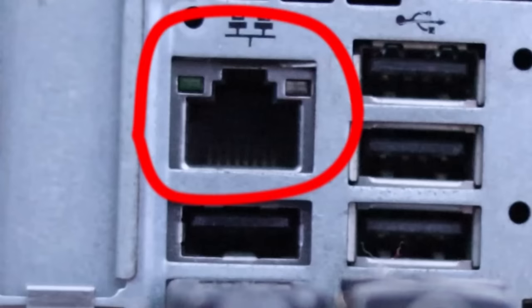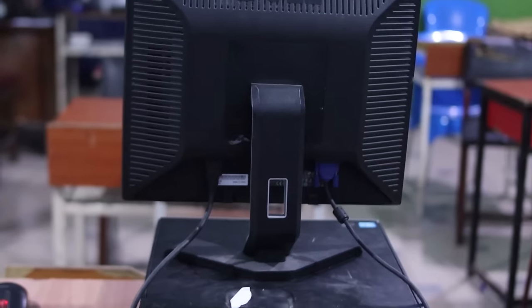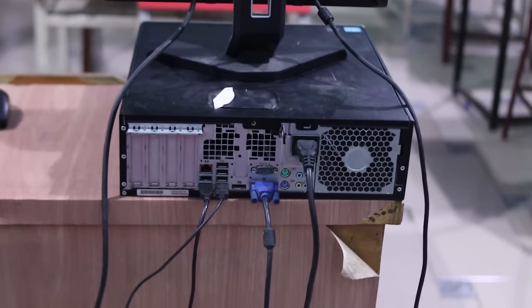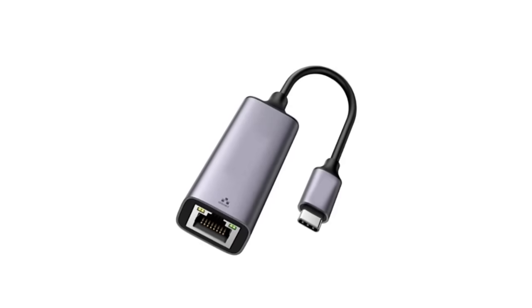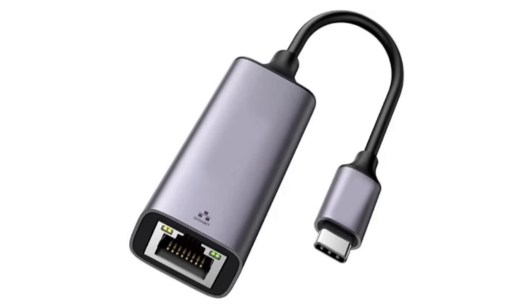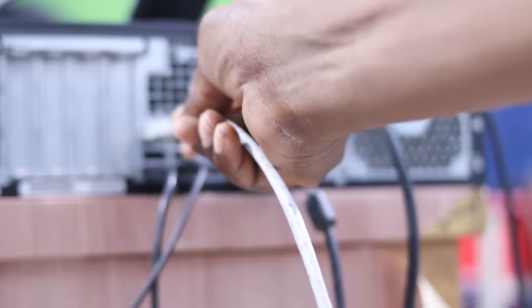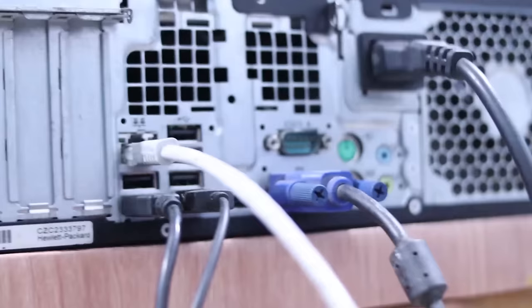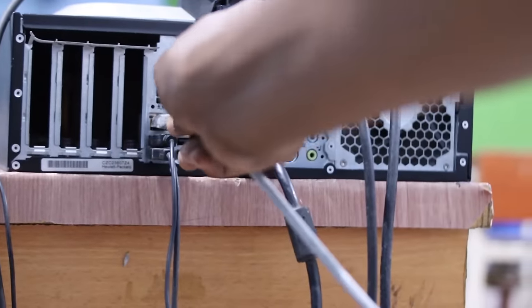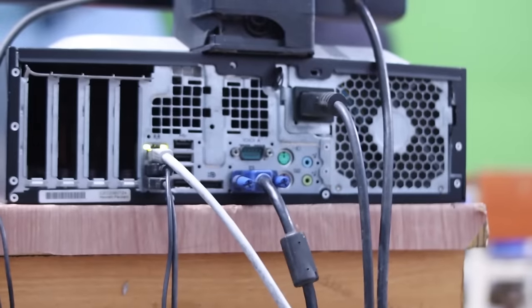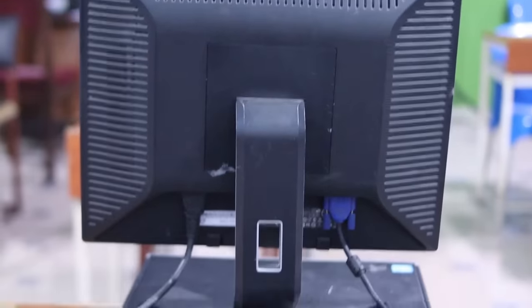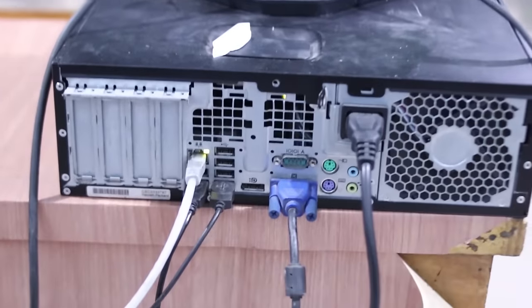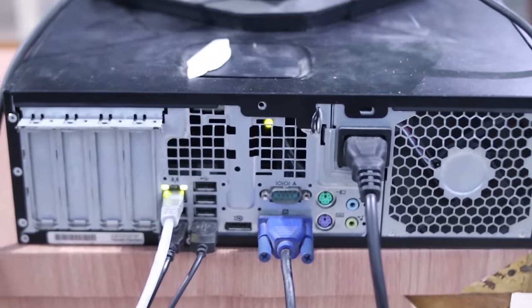The first step is to ensure both selected computer systems support ethernet cable. If either or both systems do not support ethernet cable, then an external ethernet adapter is required. Plug one end of the ethernet cable into the first system and the remaining end into the second system. You will notice a proof of connection once both ends of the ethernet cable are properly plugged into the two computer systems.